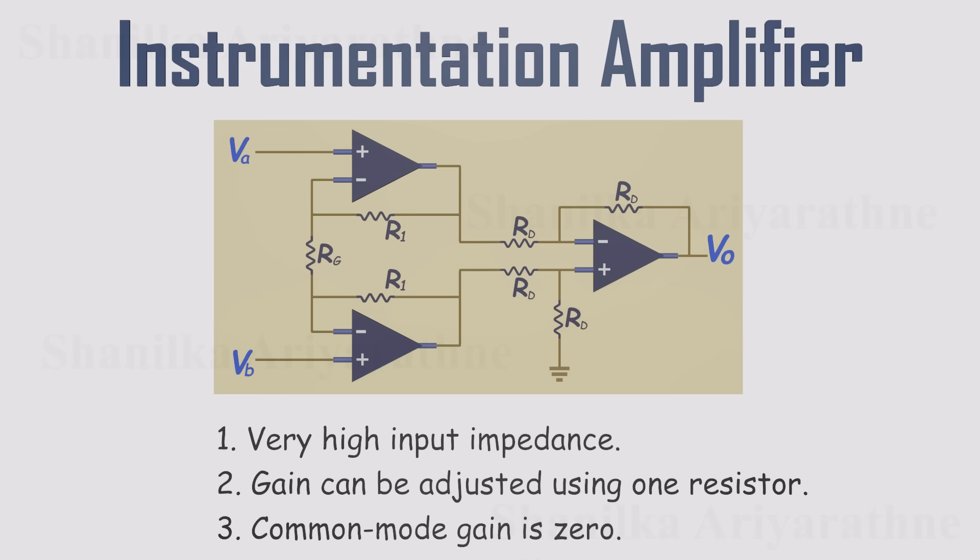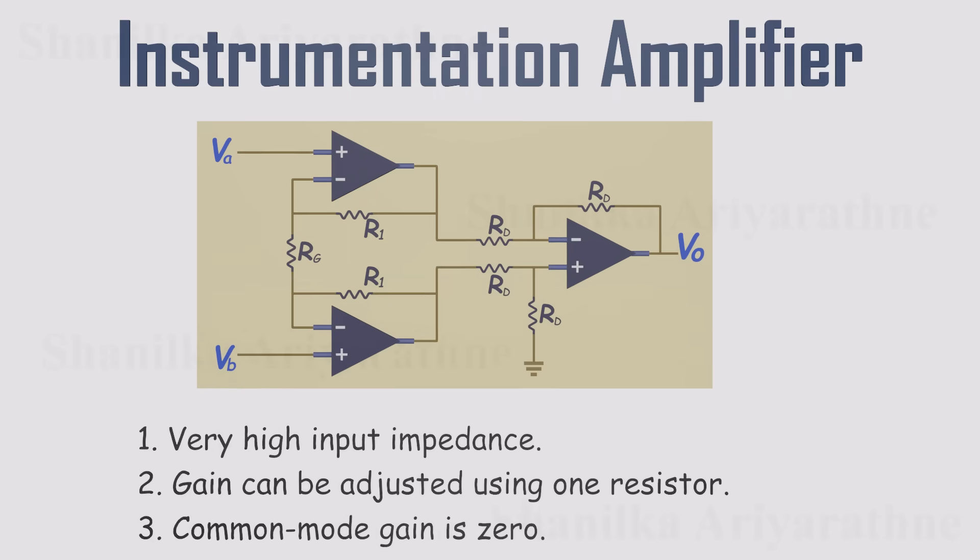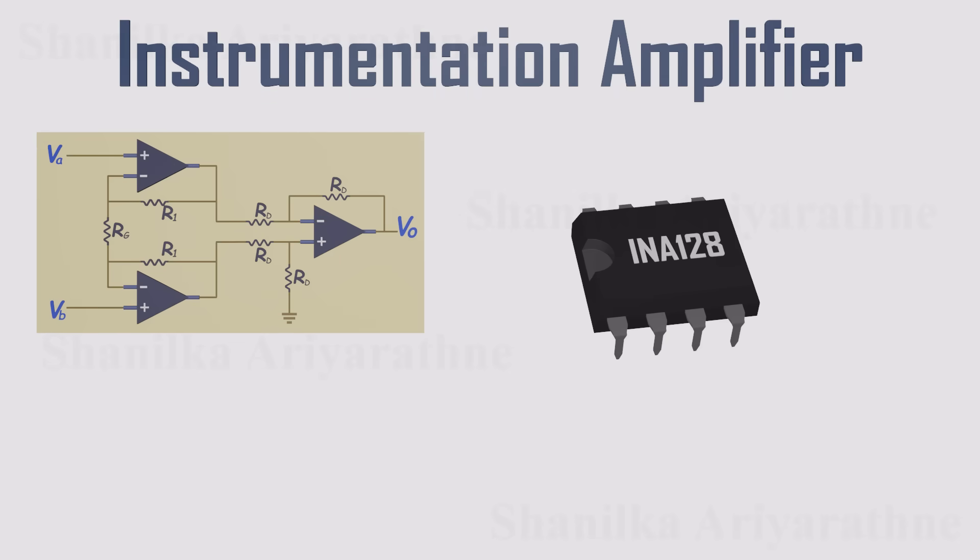The circuit itself uses three op-amps and a handful of carefully chosen resistors all designed to overcome the weaknesses of the simple differential amplifier. Most of the time, you don't need to build one yourself. You can buy an instrumentation amplifier as a ready-made 8-pin IC.